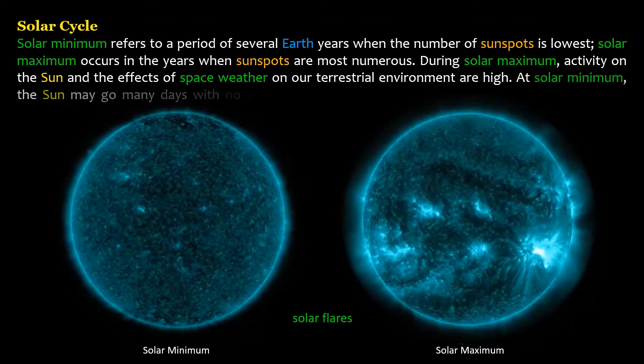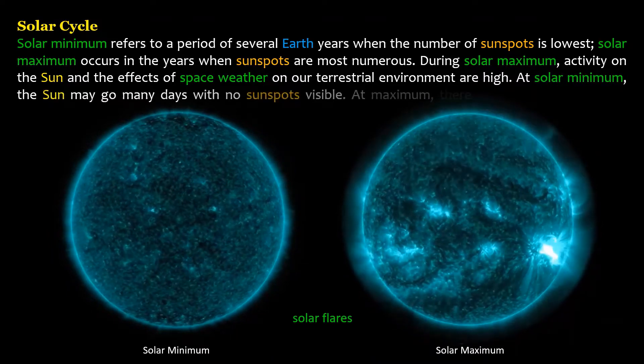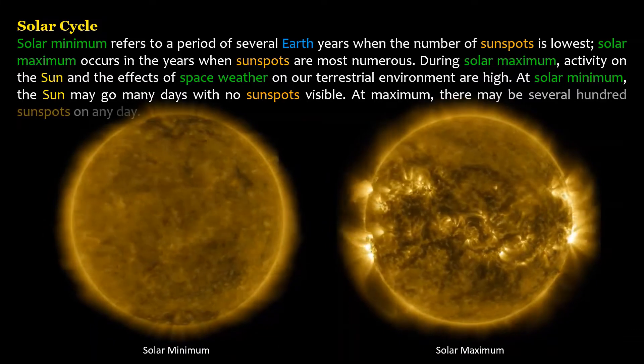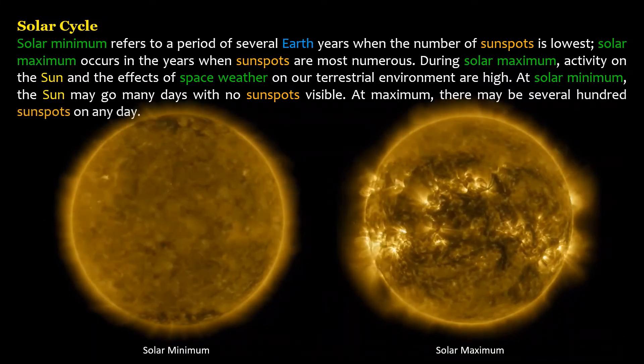At solar minimum, the sun may go many days with no sunspots visible. At maximum, there may be several hundred sunspots on any day.